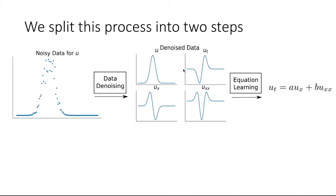This field of equation learning is not novel, but we looked at current state-of-the-art algorithms and saw a lot of challenges for the types of biological data we work with. This includes large noise levels, complicated statistical models such as the proportional error model, working with only a few time samples — where many biological processes may only be observable two, three, four, or five times — and what I would call heterogeneity between samples, where the parameters underlying the process may be drastically different between two experiments.